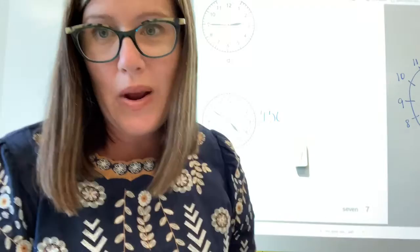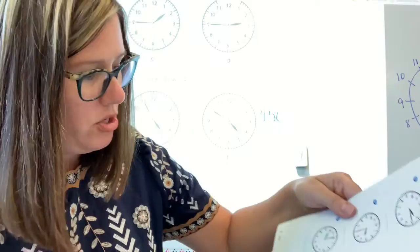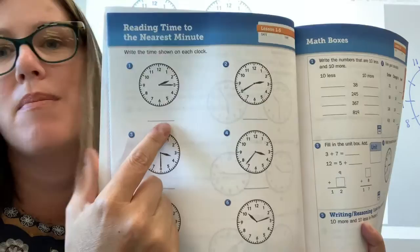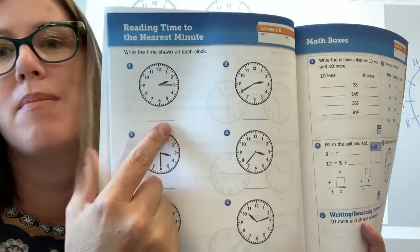So now that you've done those problems together, what I want you to do is open up your workbook or actually just turn the page to page eight. Page eight has all these clocks on it. Six clocks. I want you to tell the time and put the time on the blank. Six clocks to do on your own. I will have you submit this as an assignment so that I can see your work.